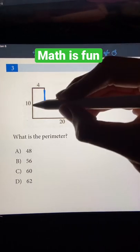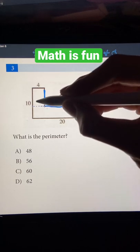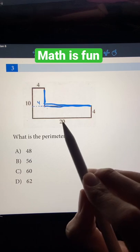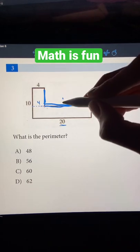So since this side length here is 4, that means that this piece right here is also 4, which means that this line right here is just 20 minus 4, which is 16.